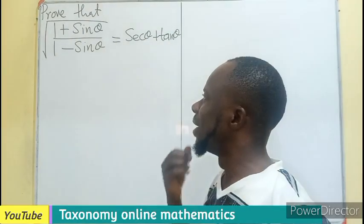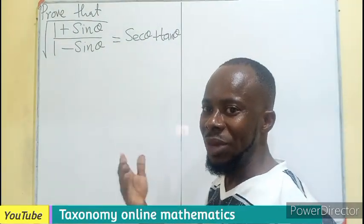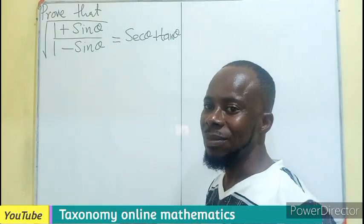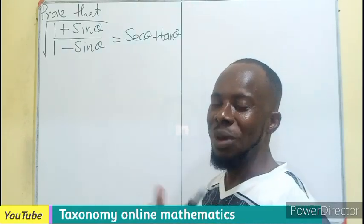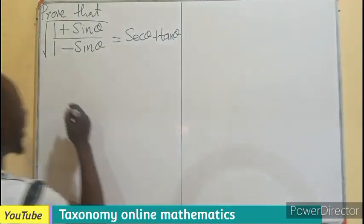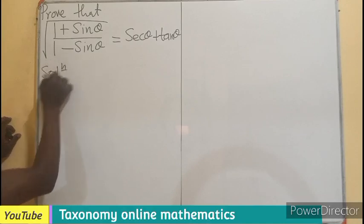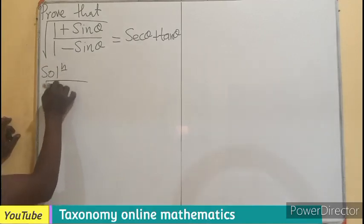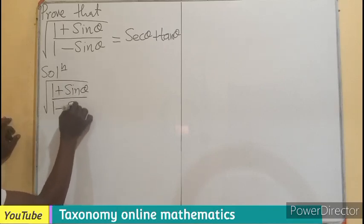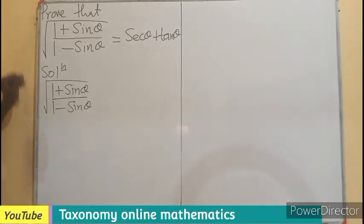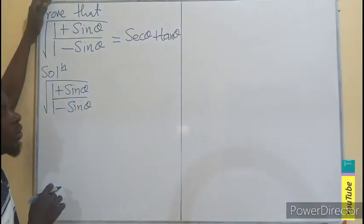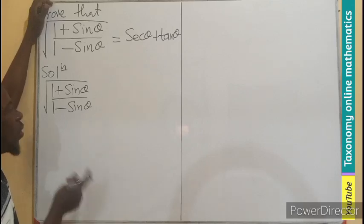What are we going to do? It is a square root, so we need to see how we can easily manipulate that. We can also approach it by performing the rationalization of the denominator. I want to prove the left hand side is equal to the right hand side, so I'll be using the conjugate pair of the denominator.